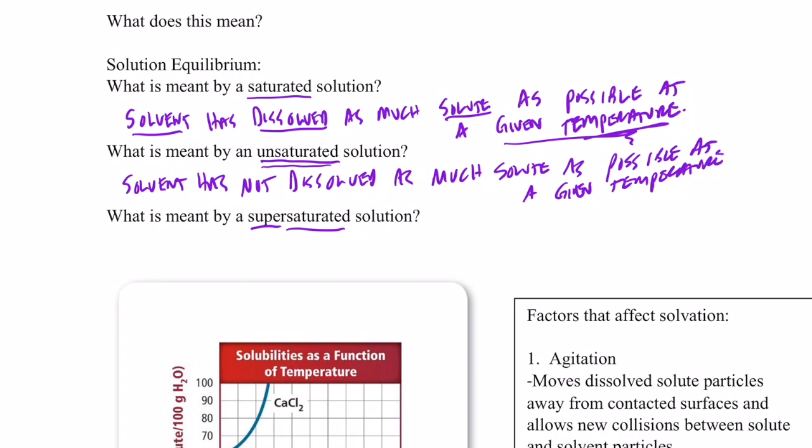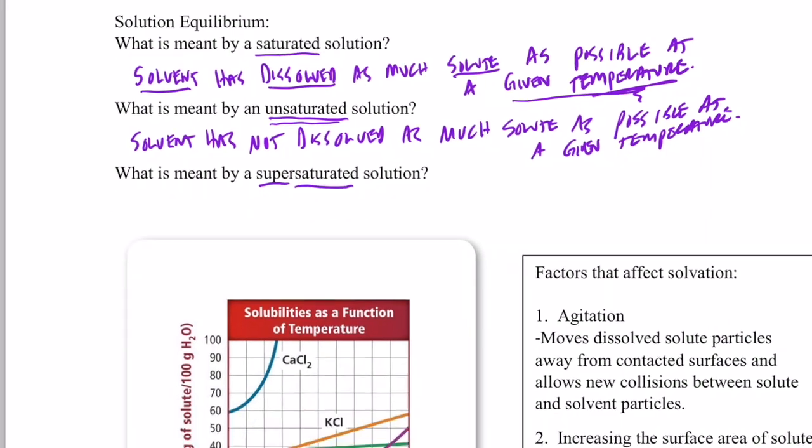Yeah, you're right. So we're going to say our solvent has not dissolved as much solute as possible at a given temperature. So before you reach that point, as you're adding potassium chloride to water, before you reach that point where the crystals settle to the bottom, they are dissolving in the water. So you have an unsaturated solution until you reach that point where no more can dissolve at a given temperature.